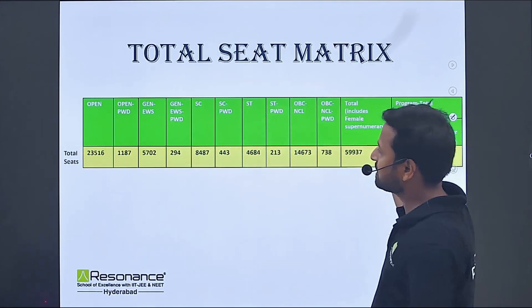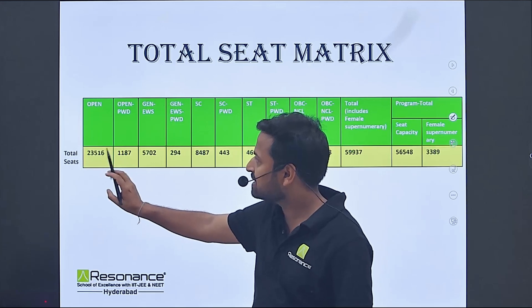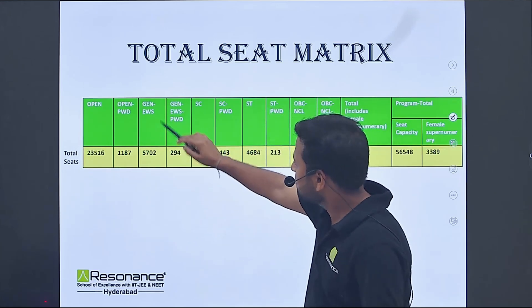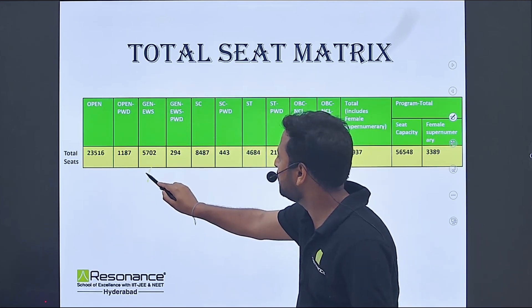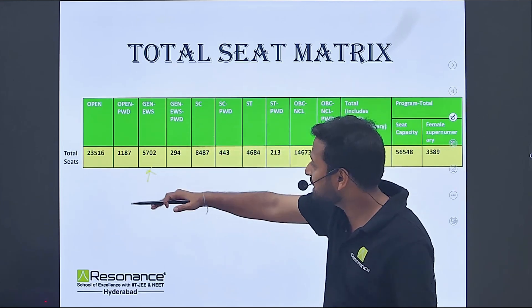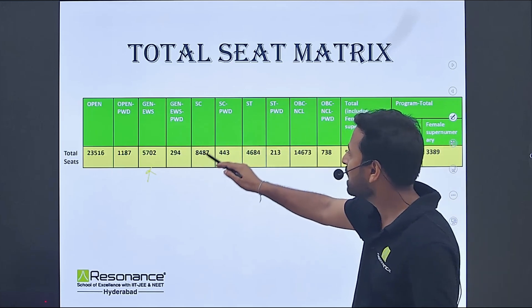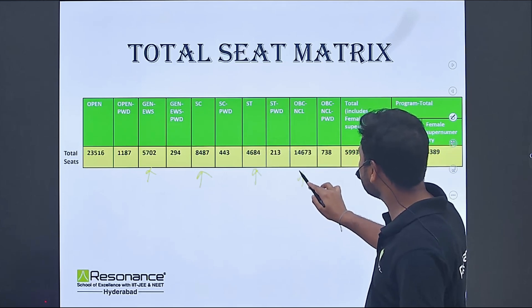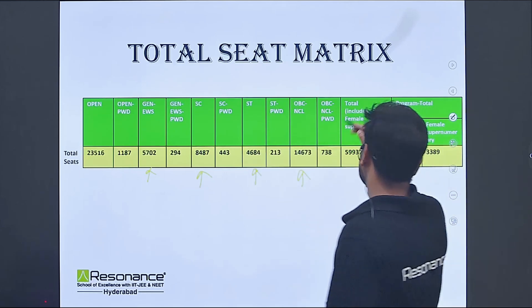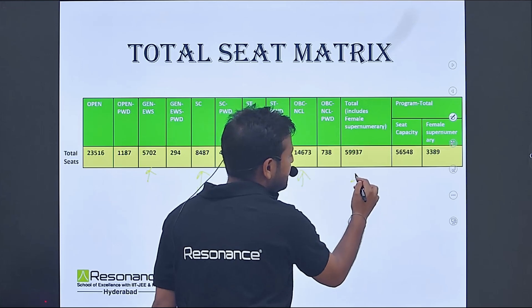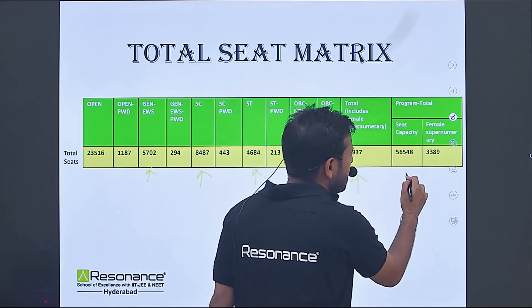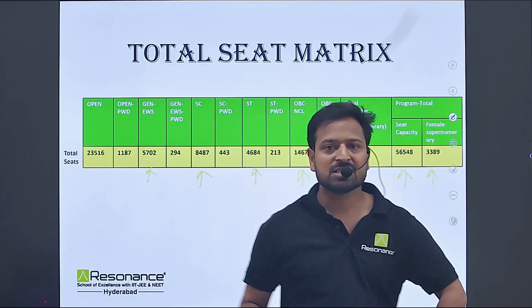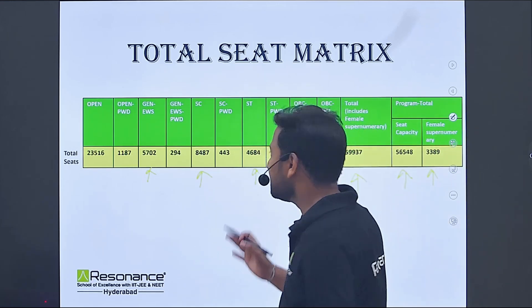Looking at the total seat matrix: in open category we have 23516, open PWD 1187, general EWS 5712, PWD 294, SC 8487, ST 4684, OBC NCL 14673. Total including female supernumerary is 59937. Seat capacity is 56548 and female supernumerary is 3389.